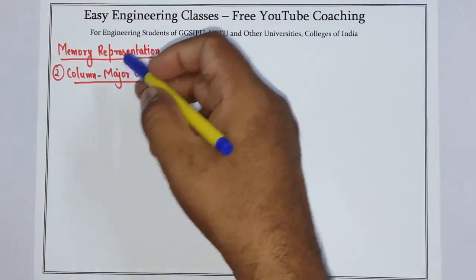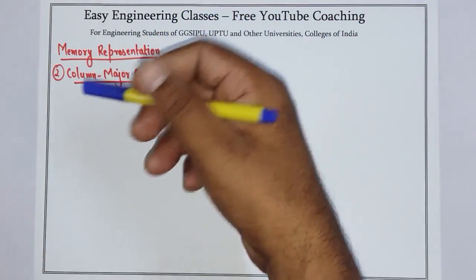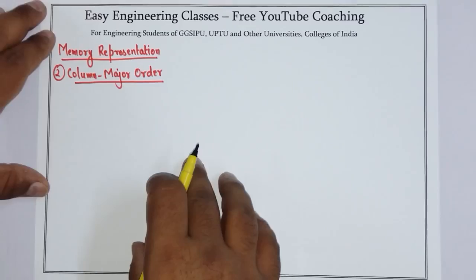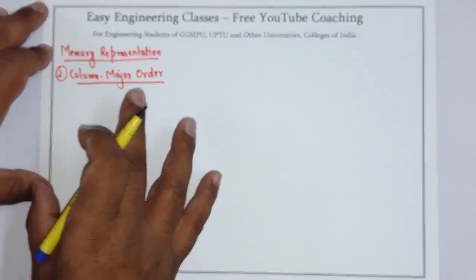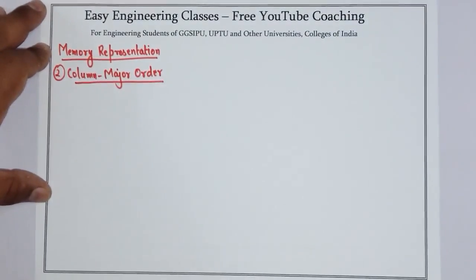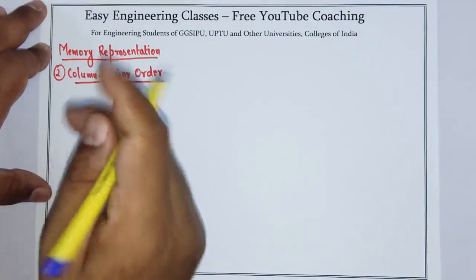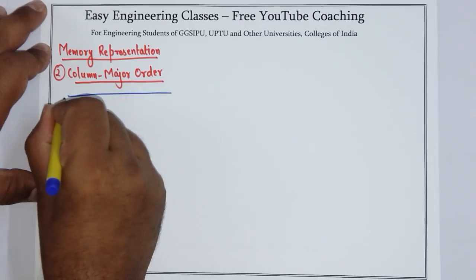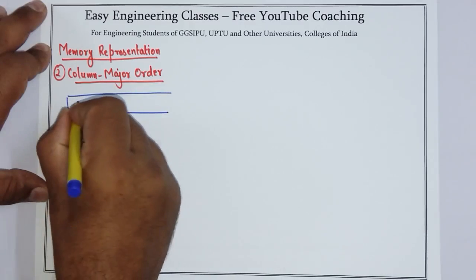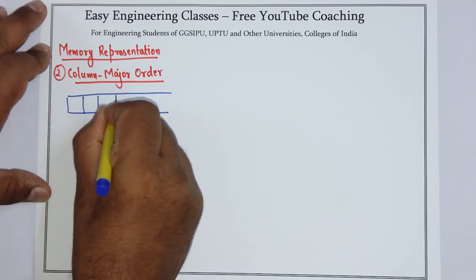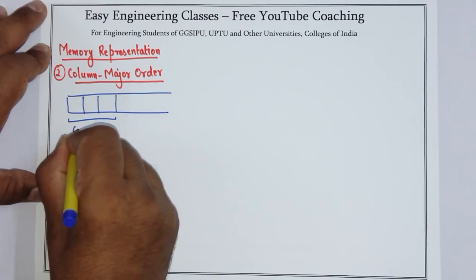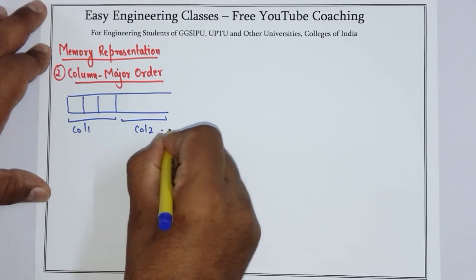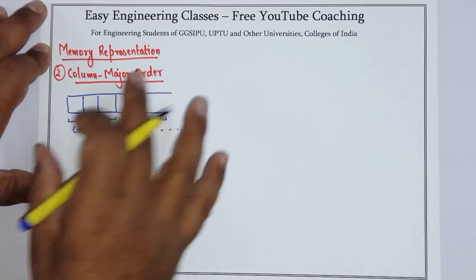Hello students, today we will see memory representation of 2D array using column major order technique. In this technique, the elements are stored column by column. What does this mean? The first column is stored first. So if I represent in memory like this, first column 1 is stored completely, then column 2, and so on.